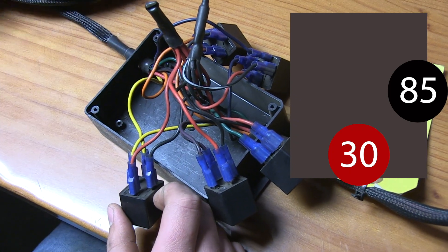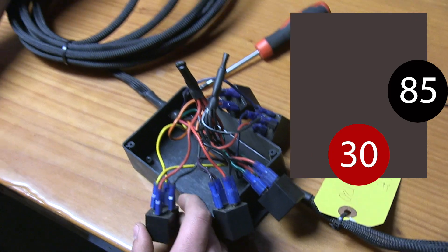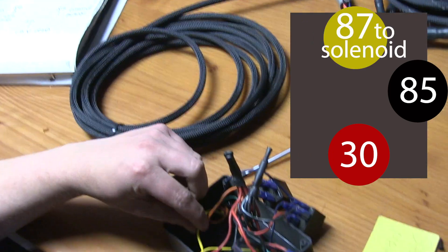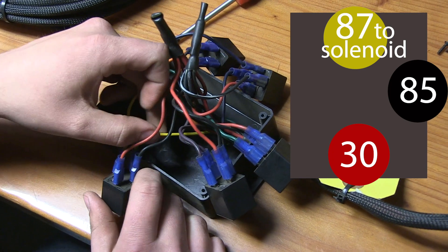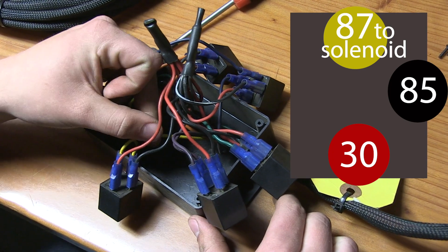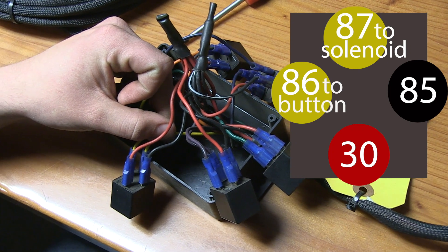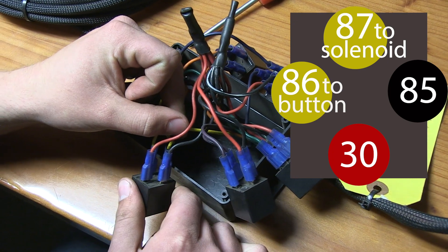The colored wire from the long part of the harness that goes to the solenoid harness will go to terminal 87. And then the colored wire that goes to the button harnesses should be on terminal 86.